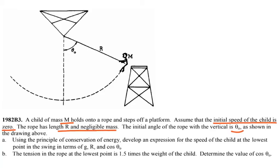This is question 1982 AP Physics B. A child of mass M holds onto a rope and steps off a platform. Assume that the initial speed of the child is zero. The rope has length R and negligible mass.